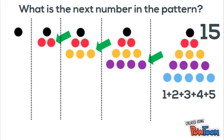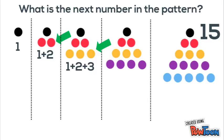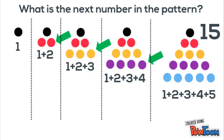Another way to look at this pattern is to look at the sum of each row. So the first term just has one circle. The second term is 1 plus 2. The third term is 1 plus 2 plus 3. The fourth term is 1 plus 2 plus 3 plus 4. So the fifth term would be 1 plus 2 plus 3 plus 4 plus 5, which equals 15, like we've already seen.